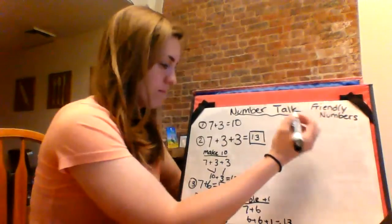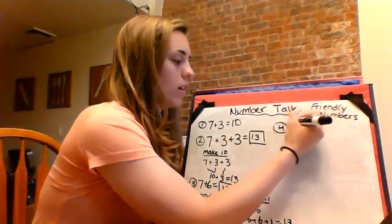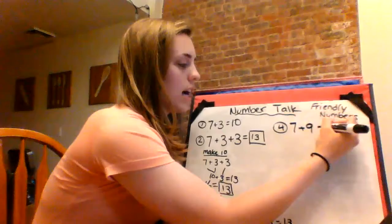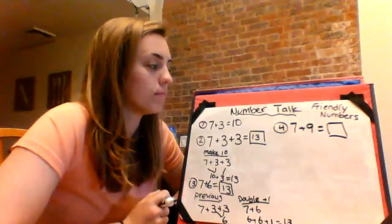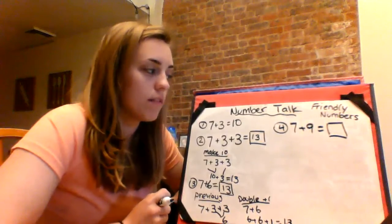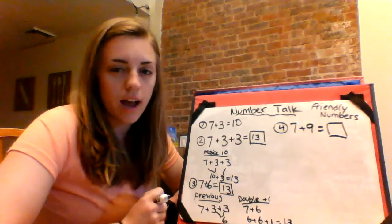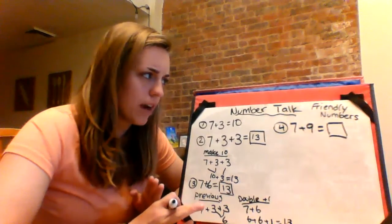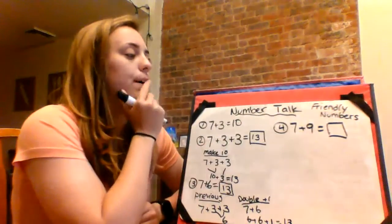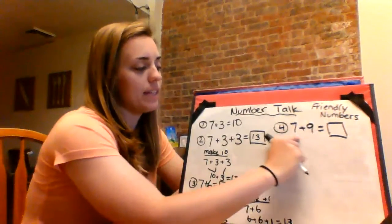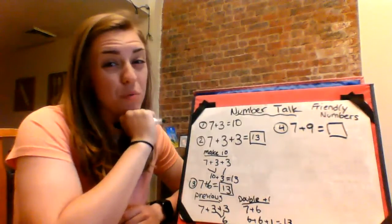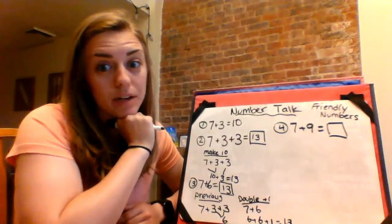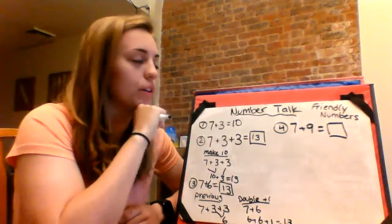Last one. Seven plus nine. Now remember, we're using the make ten strategy to create a friendly number, and we don't have a ten, and we can't make a ten by putting any two numbers together, so we might have to decompose a number. Okay, so think about that while you're solving it.